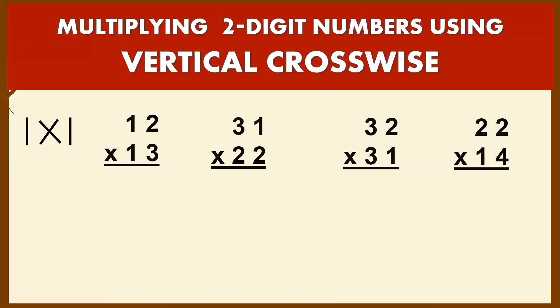For example, we have 12 times 13. We multiply the first column: 1 times 1, which equals 1. Next we multiply crosswise: 1 times 2 is 2, then 1 times 3 is 3. We add them together: 2 plus 3 is 5. The last step is to multiply the ones digits: 2 times 3, which gives you 6. Our answer is 156.